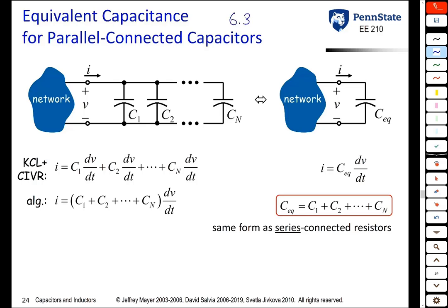In section 6.3 of the book, we're going to look at capacitors and inductors connected in series and parallel. Let's start with capacitors connected in parallel. Suppose you have N capacitors connected in parallel. They all have the same voltage — we'll call it V because they're connected in parallel. They all share the same top node and the same bottom node.